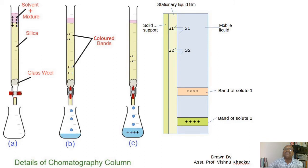During the flow, solute one distributes between the stationary liquid film and the mobile phase, showing distribution between solvent one and solvent two. Solute two also shows its own distribution between the two solvents. The flow of each solute towards the bottom depends upon its distribution coefficient. Because there is a difference in their distribution coefficients, they are separated — solute one in band one and solute two in band two.